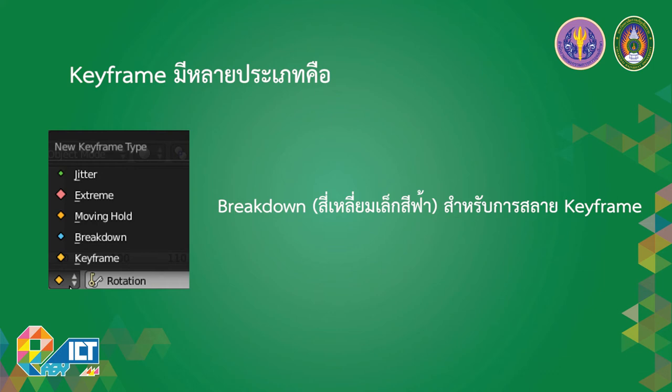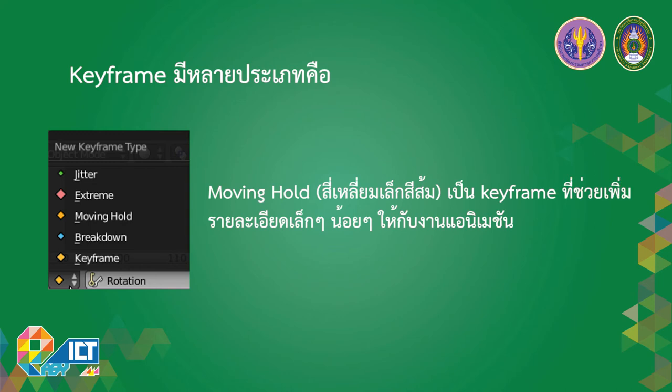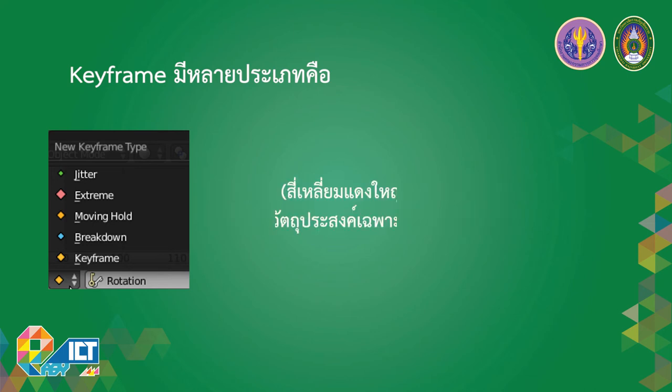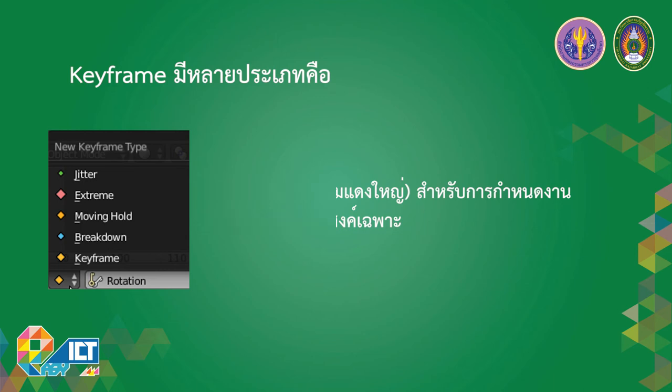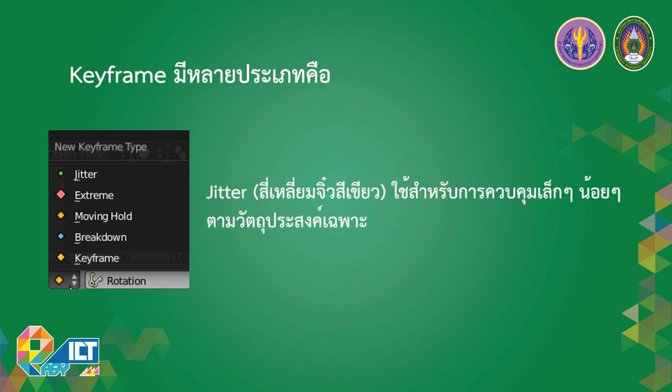ประเภทของ Keyframe ได้แก่ Keyframe แบบปกติเป็นรูปสีเหลือง, Breakdown เป็นรูปขนาดเล็กสีฟ้า ใช้สำหรับการหยุดหรือสลาย Keyframe, Moving Hold เป็นรูปขนาดเล็กสีส้ม เป็น Keyframe ที่ช่วยเพิ่มรายละเอียดเล็กๆ น้อยๆ ให้กับงาน Animation, Extreme เป็นสีเหลืองสีแดงขนาดใหญ่ ใช้สำหรับการกำหนดงานตามวัตถุประสงค์เฉพาะ และ Jitter เป็นรูปขนาดเล็กสีเขียว ใช้สำหรับการควบคุมเล็กๆ ตามวัตถุประสงค์เฉพาะ